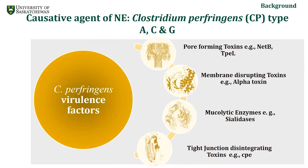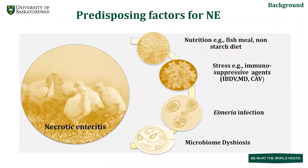Though C. perfringens secretes a wide range of exotoxins, it requires multiple predisposing factors to establish in the host. C. perfringens lacks amino acids in its machinery, so if chickens are fed a high protein diet — for example, fish or meat — these undigested proteins and amino acids are utilized by C. perfringens to divide. Another important predisposing factor is stress, which mainly includes viral agents.